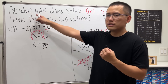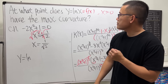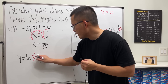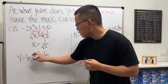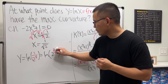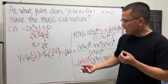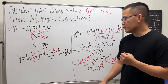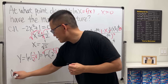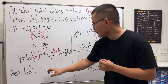To find the y-value — since the question asks for the point — y = ln(1/√2) = ln(2^(−1/2)) = −(1/2) ln(2). So the answer is x = 1/√2 and y = −(1/2) ln 2.